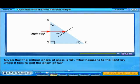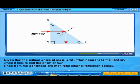Given that the critical angle of glass is 42 degrees, what happens to the light ray when it tries to exit the prism at XZ? Since both the conditions are met, total internal reflection occurs.